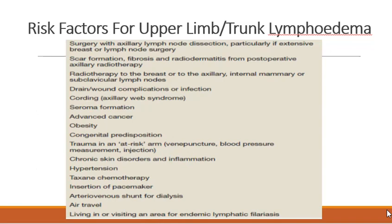Regarding risk factors for upper limb or trunk lymphedema: surgery with axillary lymph node dissection, particularly extensive breast or lymph node surgery; scar formation, fibrosis, and radiodermatitis from post-operative axillary radiotherapy; radiotherapy to the breast, axilla, internal mammary, or subclavicular lymph nodes; drain or wound complications; seroma formation; advanced cancer; obesity; congenital predisposition; hypertension; taxane chemotherapy; pacemaker insertion; and air travel.